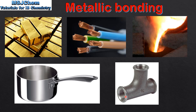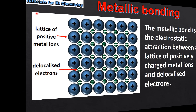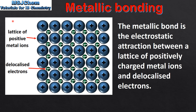And finally, metals are malleable, which means they can be bent into shape without cracking. Next we look at the metallic bond. The metallic bond is the electrostatic attraction between a lattice of positively charged metal ions and delocalized electrons.